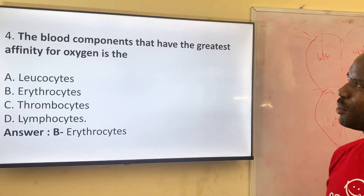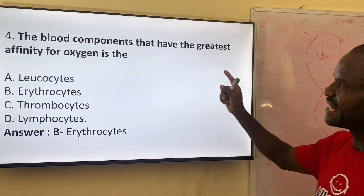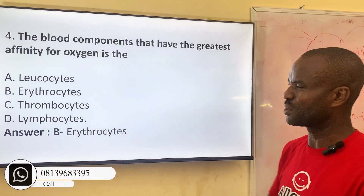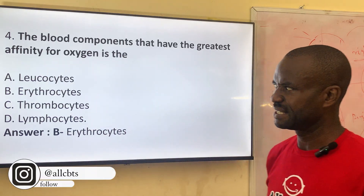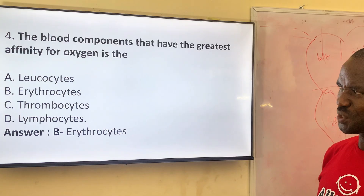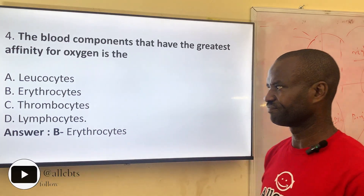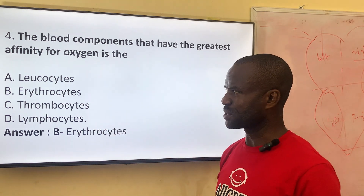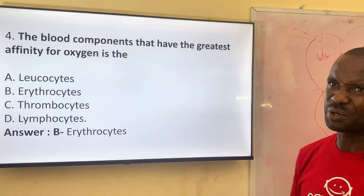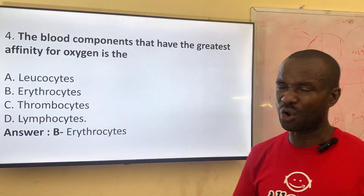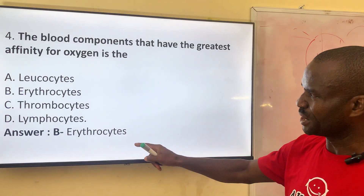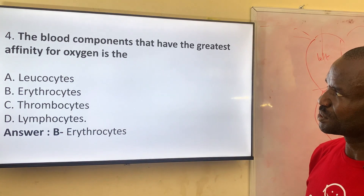Number four: the blood component that has the greatest affinity for oxygen — meaning the blood component that binds with oxygen. Option A: leukocytes — these are the white blood cells. Option B: erythrocytes — the erythrocytes are the red blood cells. Option C: thrombocytes — no. Option D: lymphocytes. The correct answer is erythrocytes, the red blood cells, because they bind with oxygen in the form of hemoglobin, called oxyhemoglobin, carrying oxygen around the body. The correct answer is B.